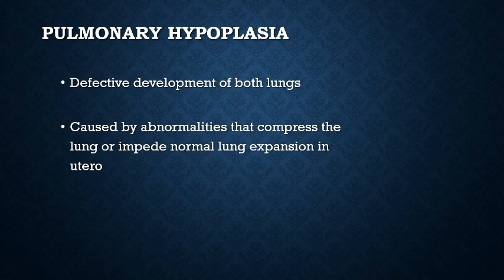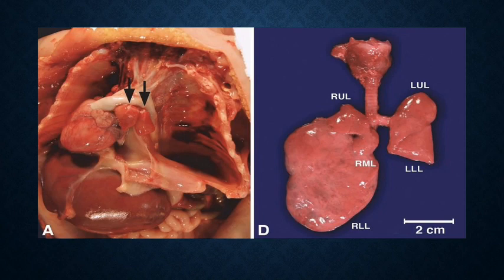Now let's discuss the congenital anomalies of the lung. Pulmonary hypoplasia is the defective development of both lungs caused by abnormalities that compress the lung or impede normal expansion in utero, such as congenital diaphragmatic hernia and oligohydramnios. Severe hypoplasia is fatal in the early neonatal period. As you can see here, this is the thoracic cavity bisected — you can see the heart, the hypoplastic lung, the liver, and the intestine. The lungs are very hypoplastic, similar in appearance to your lung buds.